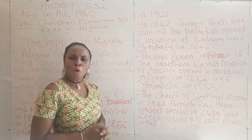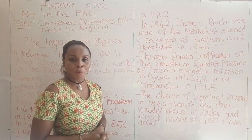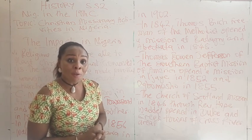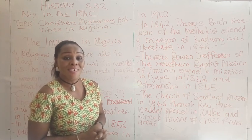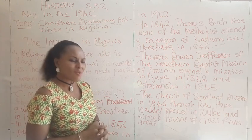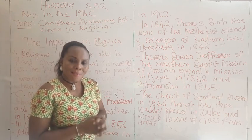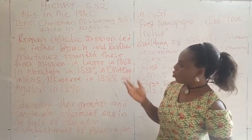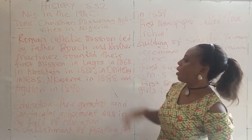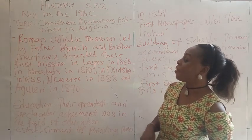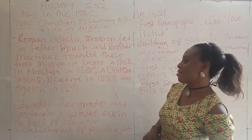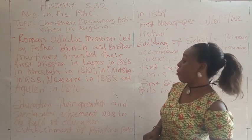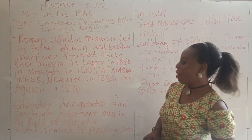We also saw the role of Reverend Mary Slessor, who played an active part. She stopped the killing of twins and fought against the execution of widows being forced through rituals during burial ceremonies. The Roman Catholic Mission was not left out. Father Borch and Brother Martinez founded their first mission in Lagos in 1868, then in Abeokuta in 1880, in Onitsha in 1885, in Inquiry in 1818, and Aguleri in 1890.